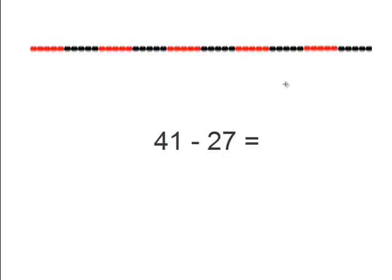Now we see here 41 minus 27. So let's take a look at the string of beads. 10, 20, 30, 40, and a 1 to make 41. So now we need to subtract 27. So let's do the 1 and then 10, 20.